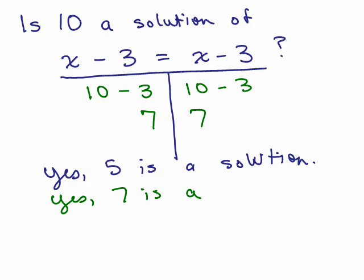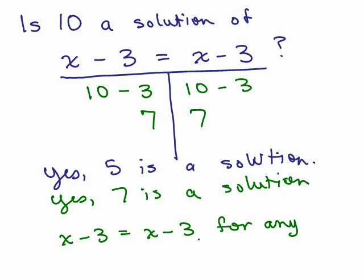So remember when I said that sometimes it's not the only solution? Here, 7's a solution, 5's a solution, and in fact, any number you put is going to be a solution here. x minus 3 equals x minus 3 for any value of x, because the two sides are exactly the same, so you might notice that. Actually, the solutions, if later you'll get into this, we'll be saying that all real numbers are solutions, I mean everything.